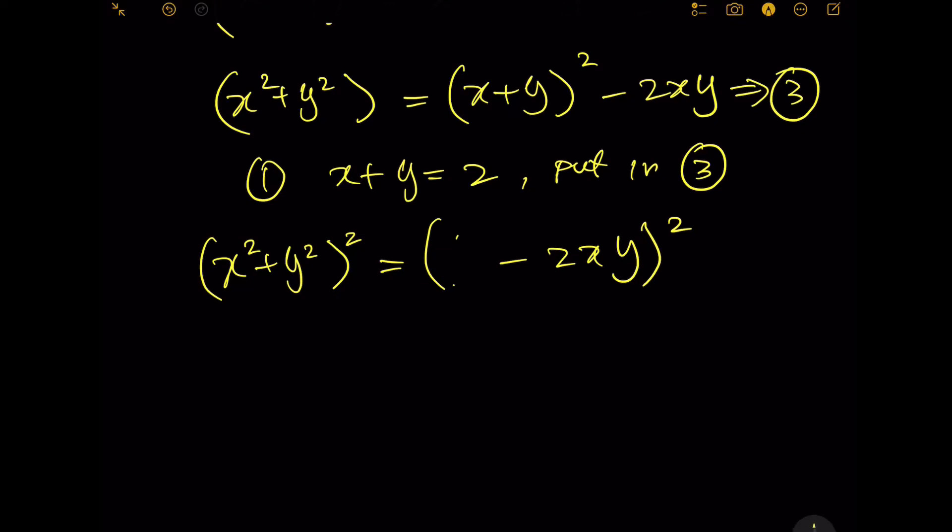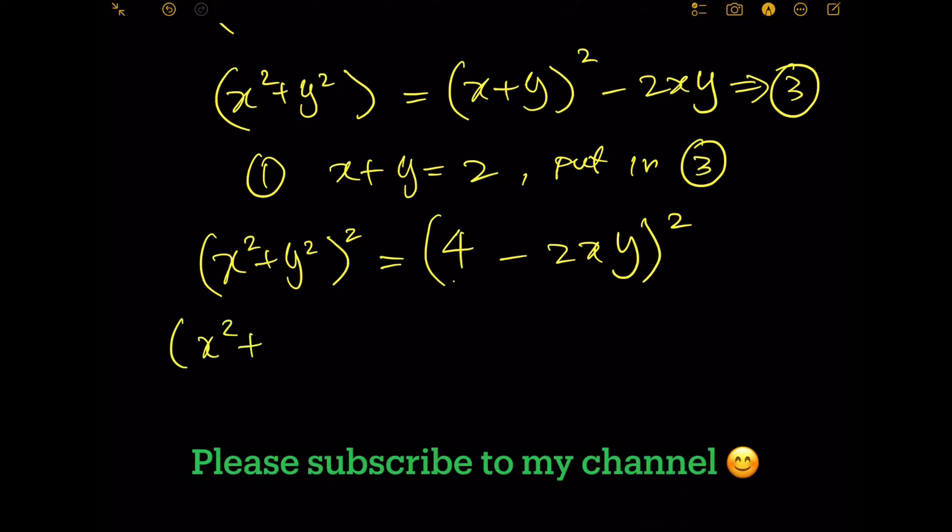So on the left hand side is (x^2 + y^2)^2 equals, on the right: 4^2 which is 16, minus 2 times 4 times 2xy which is 16xy, plus 4(xy)^2. This is equation 4.